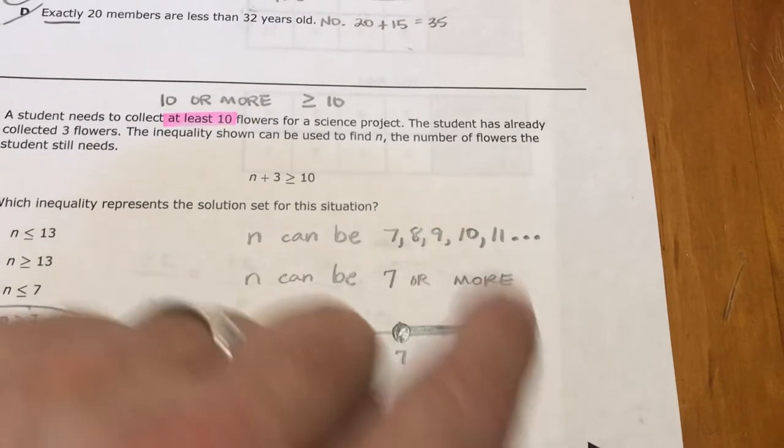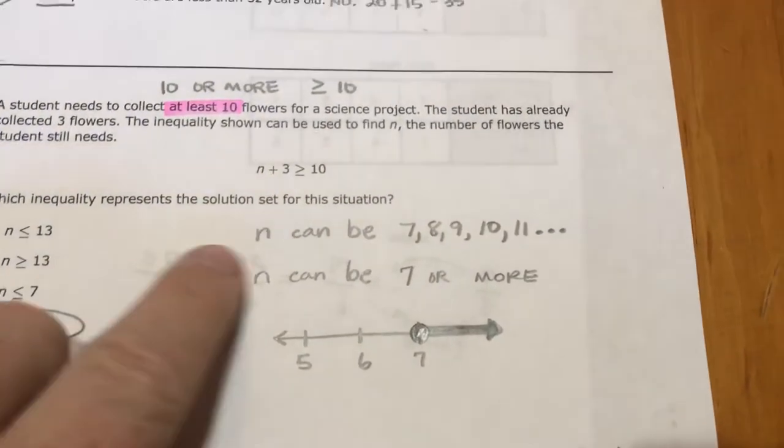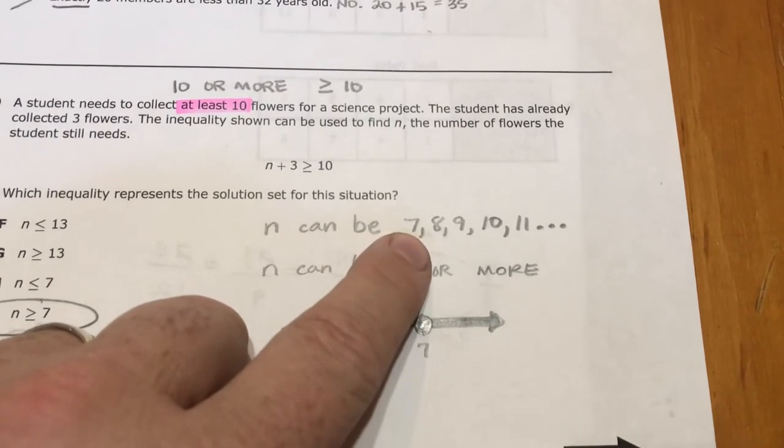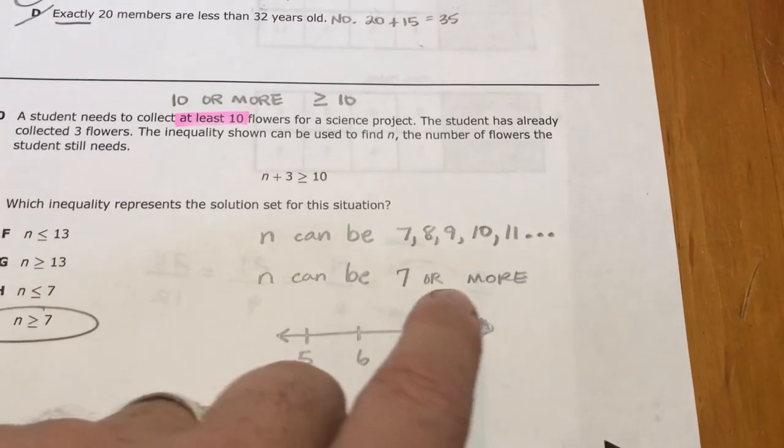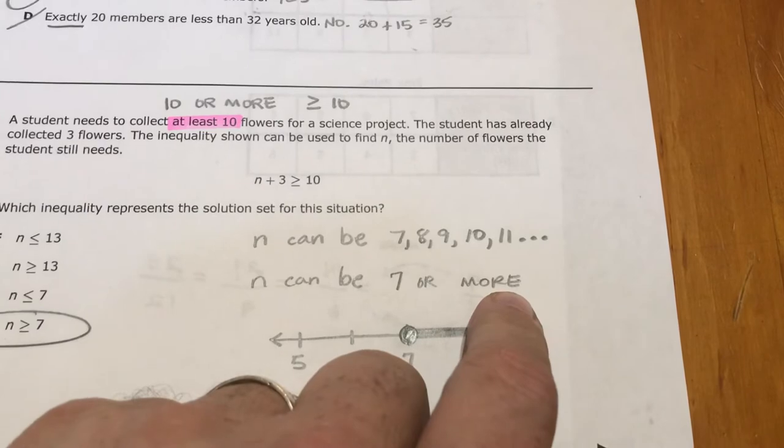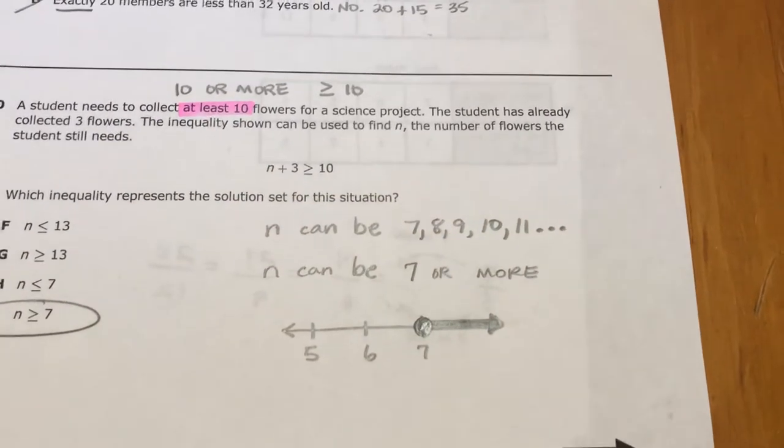So N can be 7, or it can be more than 7, because no matter what we pick, as long as it's 7 or more, it's going to be the answer. So on a number line, we would shade that in, and we would say 7 will answer this question, and every single value higher than 7 will also answer this question.